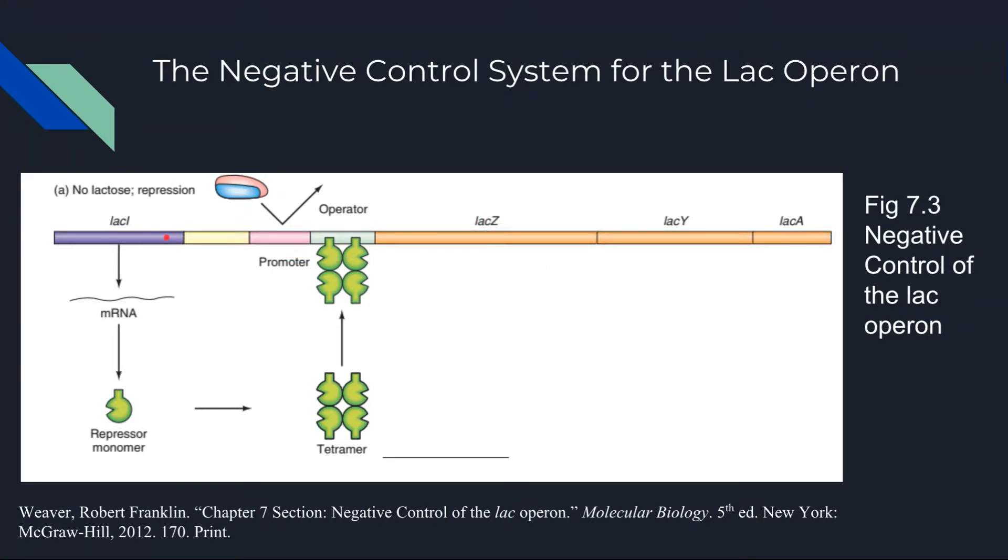This tetramer binds to the operator lac O and prevents transcription of the downstream genes. If RNA polymerase is bound to lac P, the promoter region, as seen here, it cannot continue transcribing due to this blockage. Now that we have addressed the background, we can now return to the topic of the experiment. The researchers Lee and Goldfarb were curious about the exact mechanism of repression for the lac operon. I will now hand it off to Thomas to discuss these details.